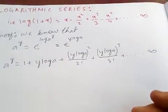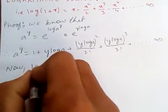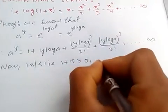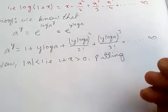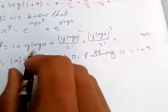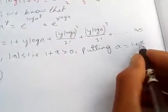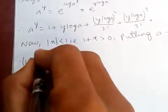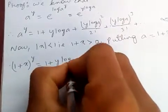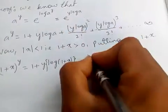Now, when the modulus of x is less than one, then (1 + x) is greater than zero. So putting a equal to (1 + x) in this series, we get (1 + x) to the power y on the left-hand side.